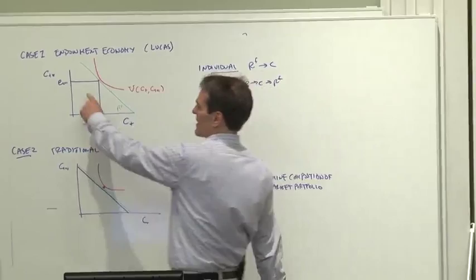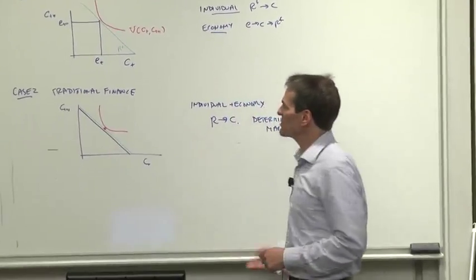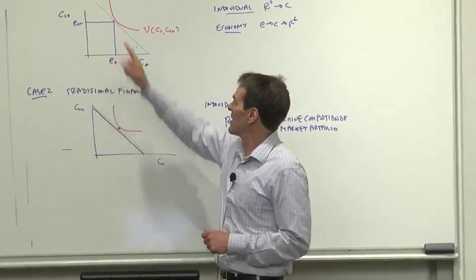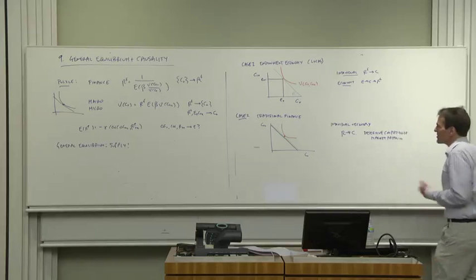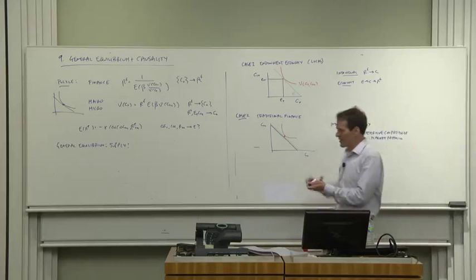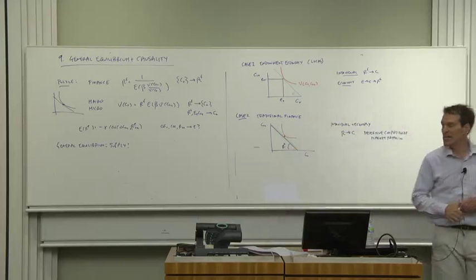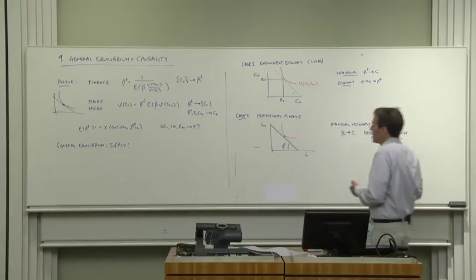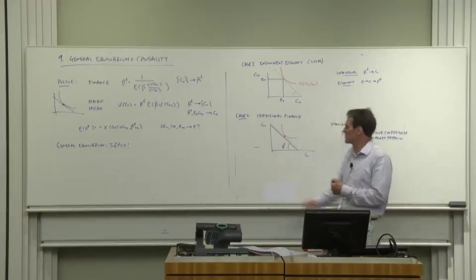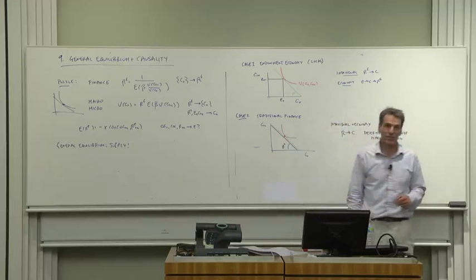Now, case two, that's not very realistic. The traditional theory of finance posited a different production technology. The traditional theory of finance wrote down a process for the rate of return, which I'll just make the interest rate for the graphical position, and then thought about people, in fact, deciding their consumption, deciding their portfolios, given rates of return.